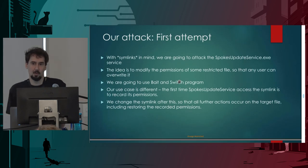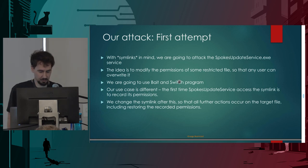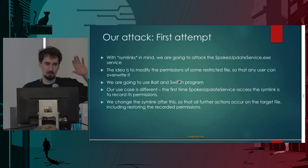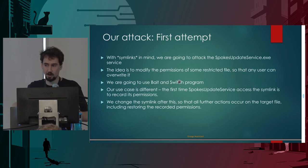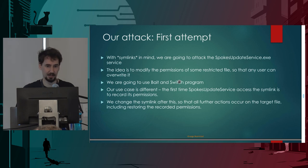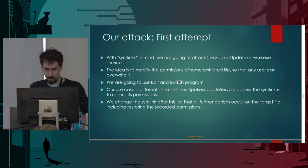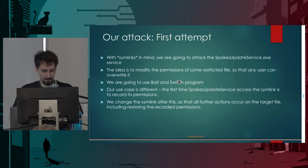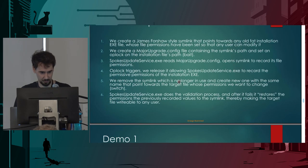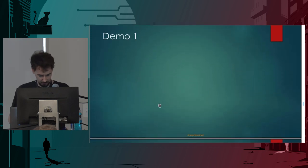For our attack on spokesupdateservice, we use bait and switch differently. The first time the service opens our symlink, it records permissions — so we make the symlink point to an installation directory with very lax permissions. When the oplock triggers, we swap the symlink to point to our target file. The service then restores those lax permissions onto the target file instead of the original installer, effectively giving us write access to any file we choose.